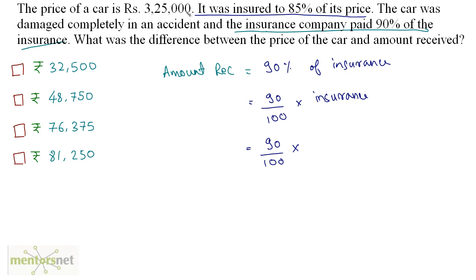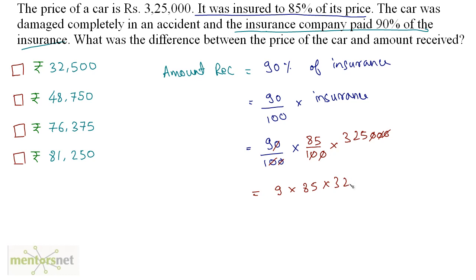The price of the car is 3,25,000 rupees, so we have 85/100 times 3,25,000. After cancelling the zeros, we get 9 times 85 times 325, which comes out as 2,48,625.